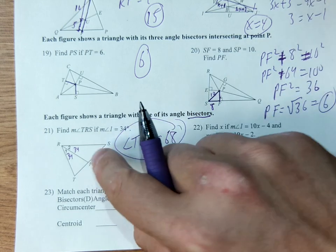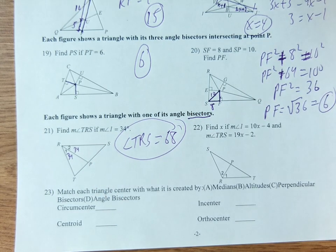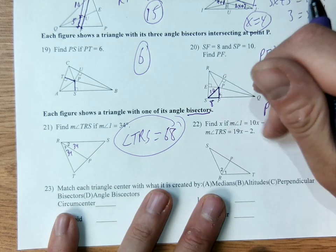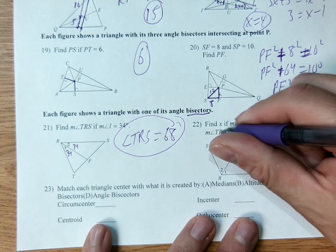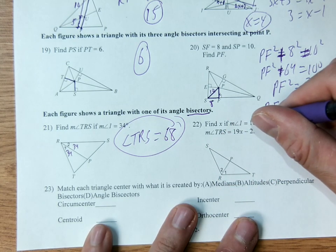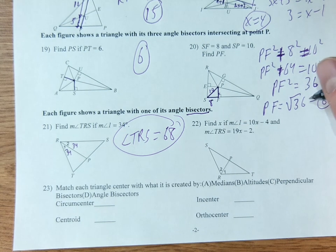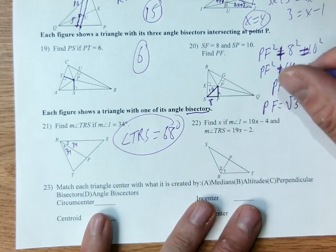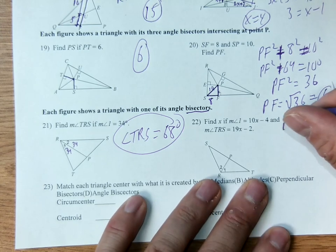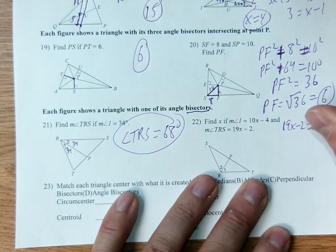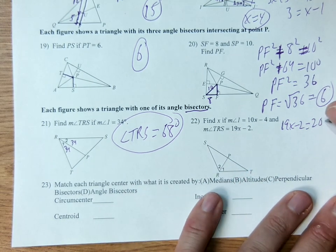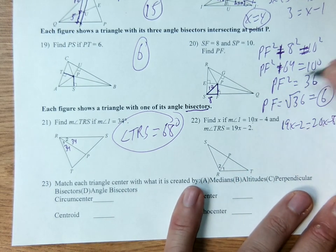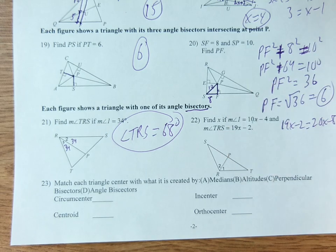Same setup here, except I've got x's now. So if angle 1 is 10x minus 4, and the whole thing is 19x minus 2, this has to be doubled to equal that. So instead of setting 10x minus 4 equal to 19x minus 2, I'm going to double that. It's going to be 20x minus 8. Double angle 1 will equal the angle TRS.